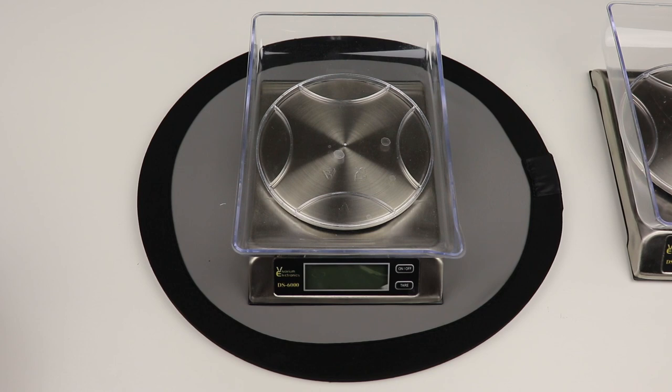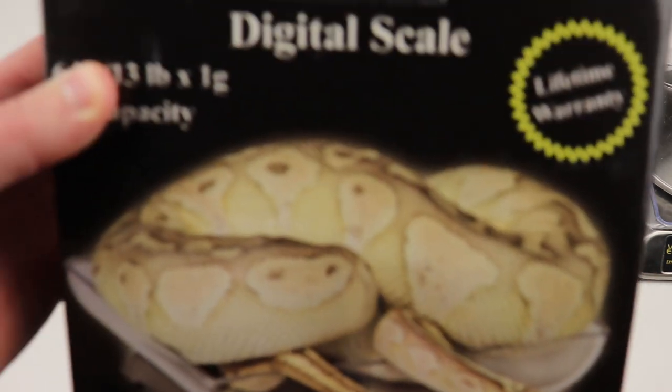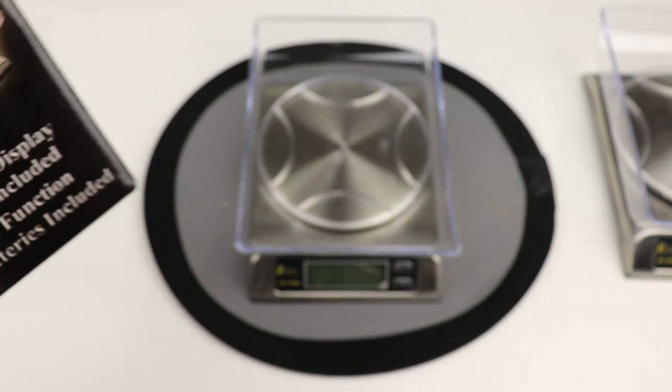So it's important that you have a scale not only for your large animals but also to be accurate for your small animals as well, which is really what led me to get my first ever DS6000 digital scale from Vivarium Electronics.